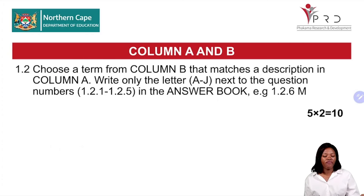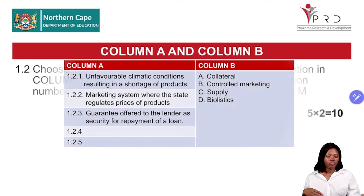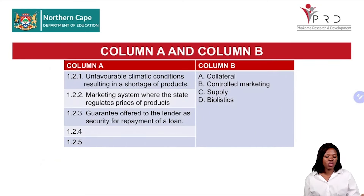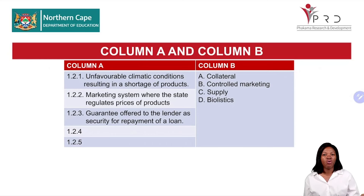Let us move to Question 1.2 — Column A and B. Choose a term from Column B that matches a description in Column A. Write only the letter A to G next to question numbers 1.2.1 to 1.2.5 in the answer book. Each question carries 2 marks, and the total for 1.2 is 10 marks. In this section, you only select the letter that matches the description in Column A, with descriptions in Column A and terms in Column B.